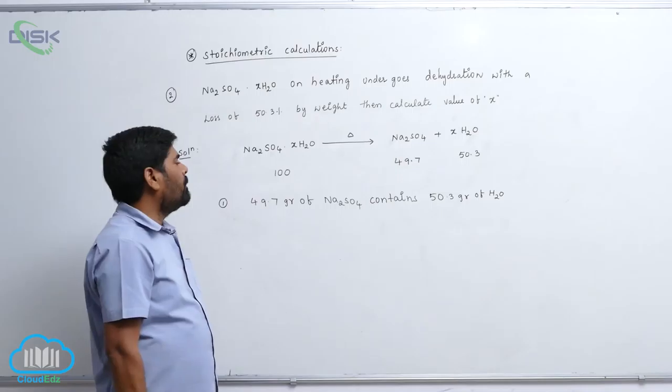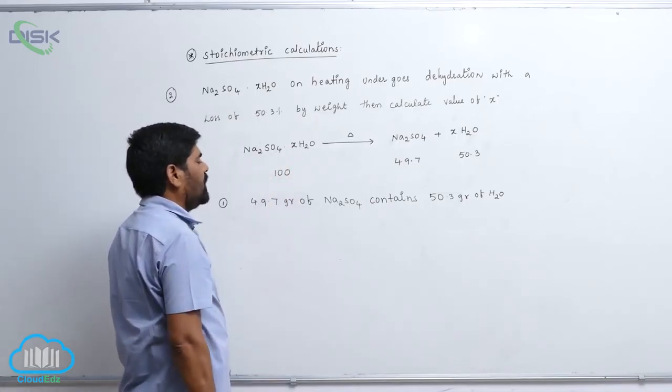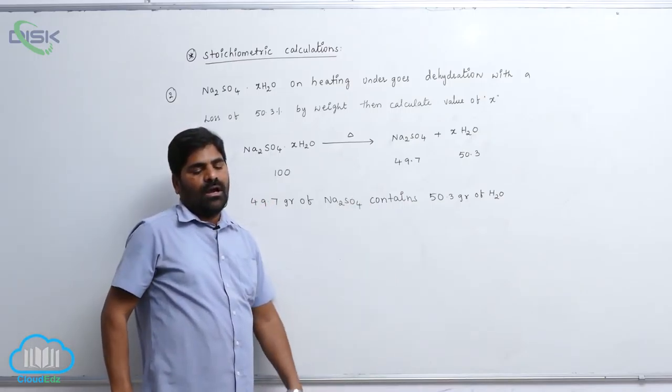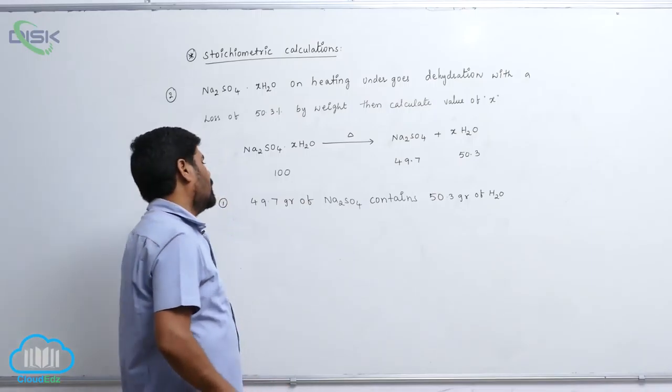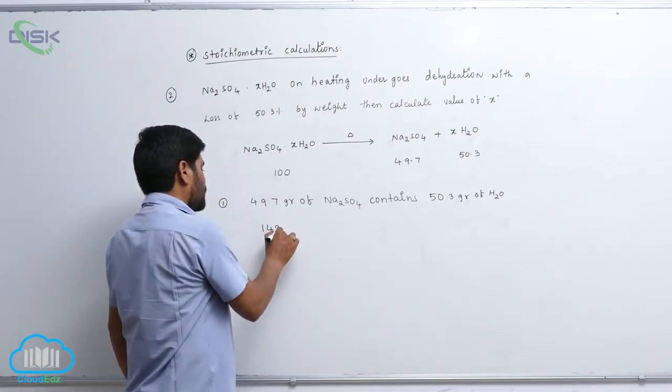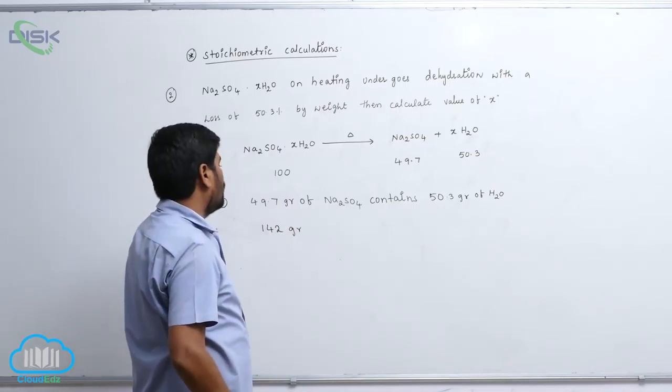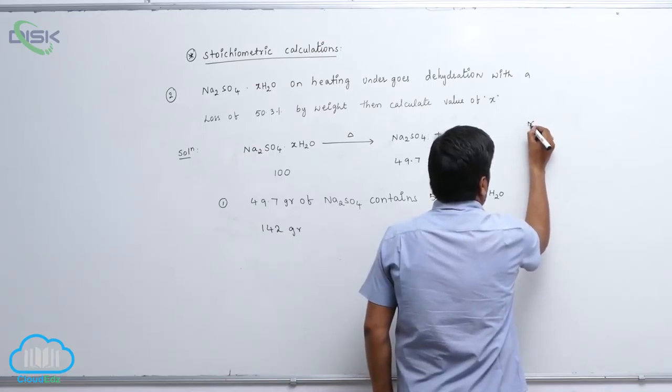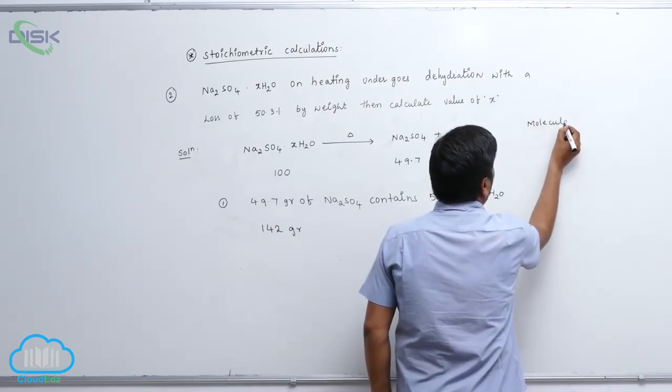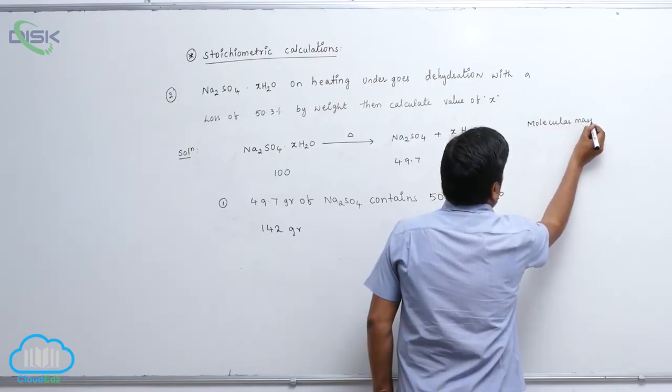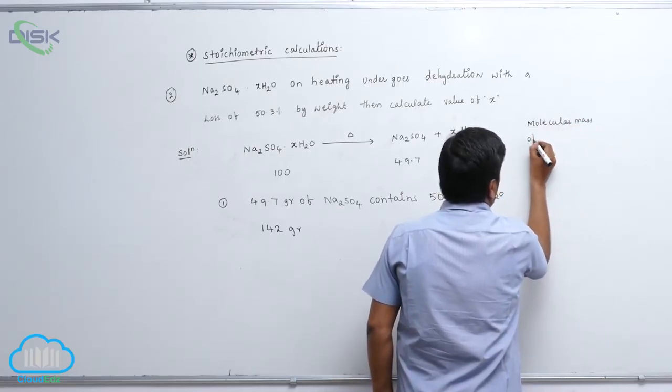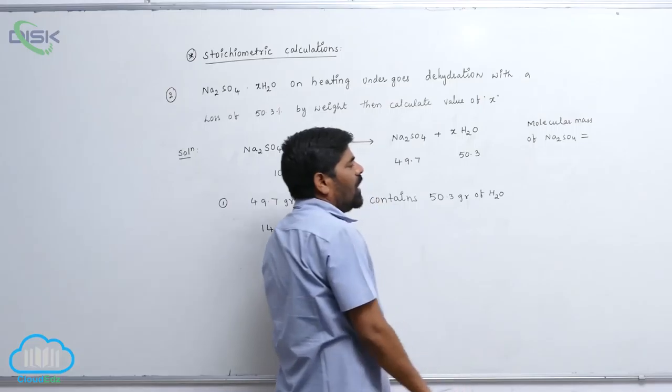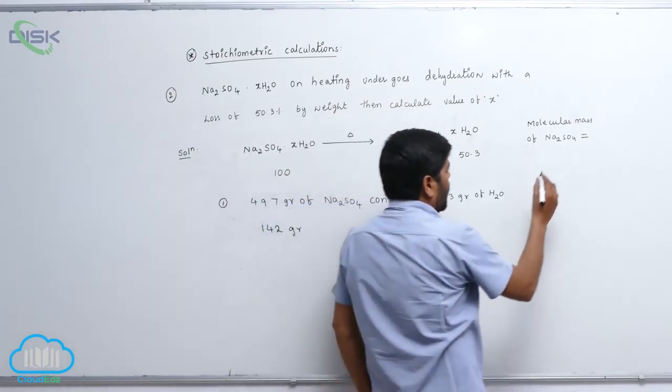Then the molecular weight of sodium sulfate is... already we know the molecular weight without water, the molecular weight of sodium sulfate is 142 grams. 142 grams. Okay, here, molecular mass of sodium sulfate is 142.